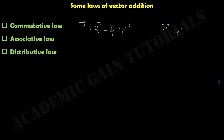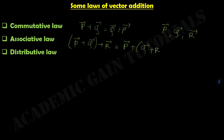Coming to the second law, which is associative law. Associative law states that if we add one more vector R, then if I add first P plus Q and then add that result with vector R, the grouping does not matter. This is known as associative law.